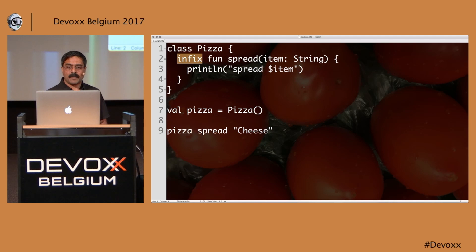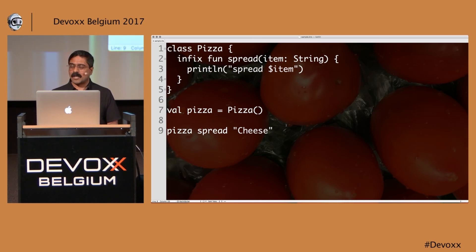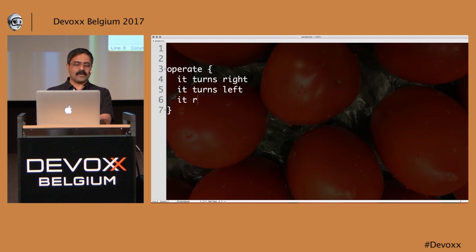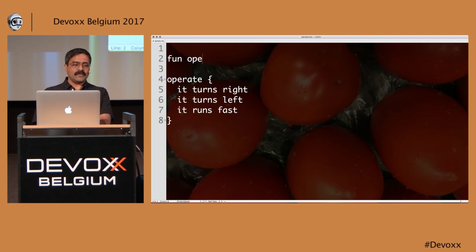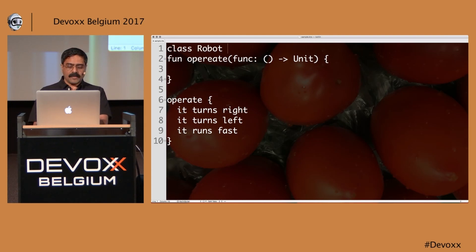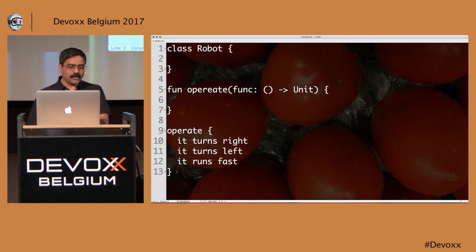So all you have to do is add the 'infix' keyword — single parameter arguments can be used for it. The final example I'll show is applying this to something a little bigger. What if we can write: 'operate { it turns right; it turns left; it runs fast }'? Let's see how. Function operate takes a lambda expression as an argument. I specify func as a Robot -> Unit lambda. Then I create a class called Robot with an infix function called turns that takes a direction String.